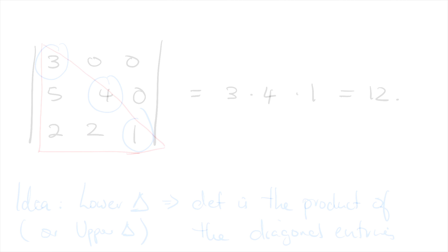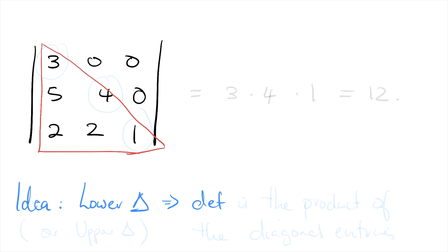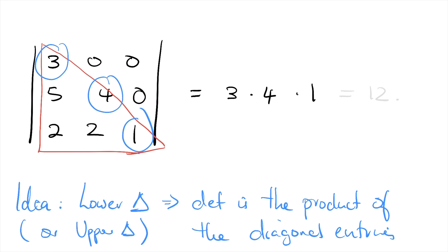Say we've got a different matrix: 3, 0, 0, 5, 4, 0, 2, 2, 1, and we want to find the determinant. This is not a diagonal matrix; however, it is triangular — specifically lower triangular, because all of the non-zero entries occur below the main diagonal. For lower triangular matrices, the determinant is also the product of the diagonal entries, and this also works for upper triangular. So the determinant is 3 × 4 × 1, which is 12.